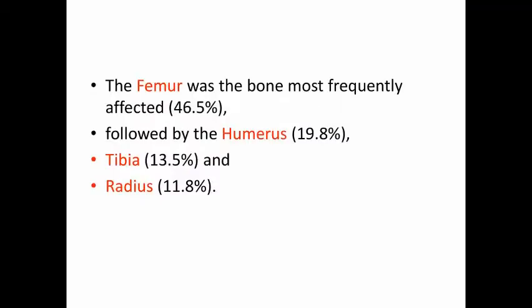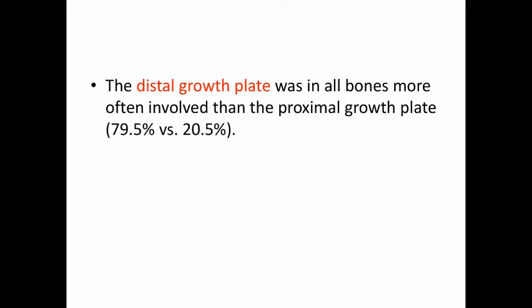In small animals — dogs and cats — the femur was the most frequently affected bone at around 46.5%, followed by the humerus at 19.8%, tibia at 13.5%, and radius at 11.8%. One important point to remember is that the distal growth plate was more often involved than the proximal growth plate in all bones, with distal growth plate involvement at around 79.5% compared to only 20.5% for the proximal growth plate.